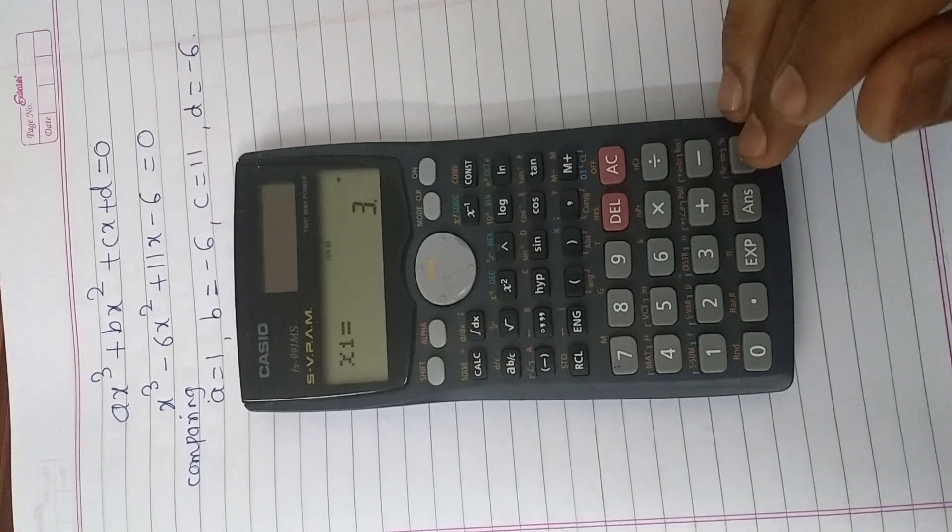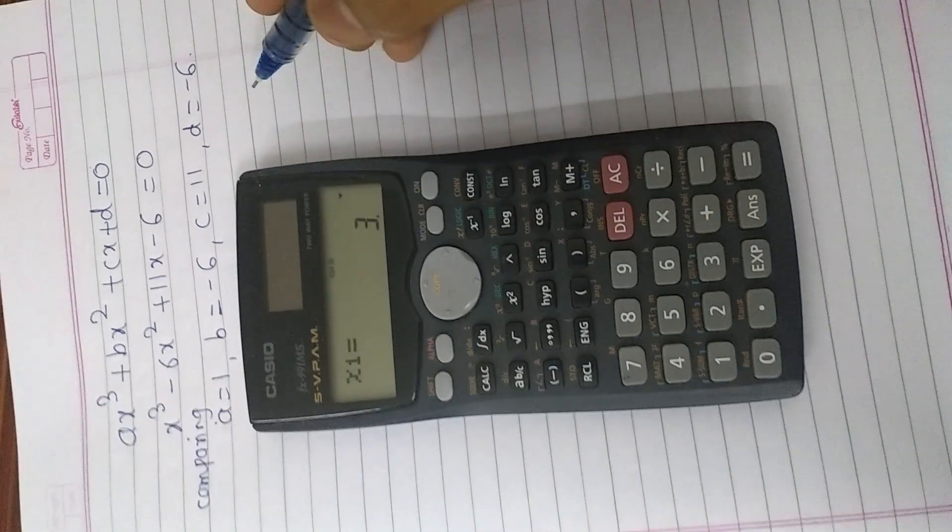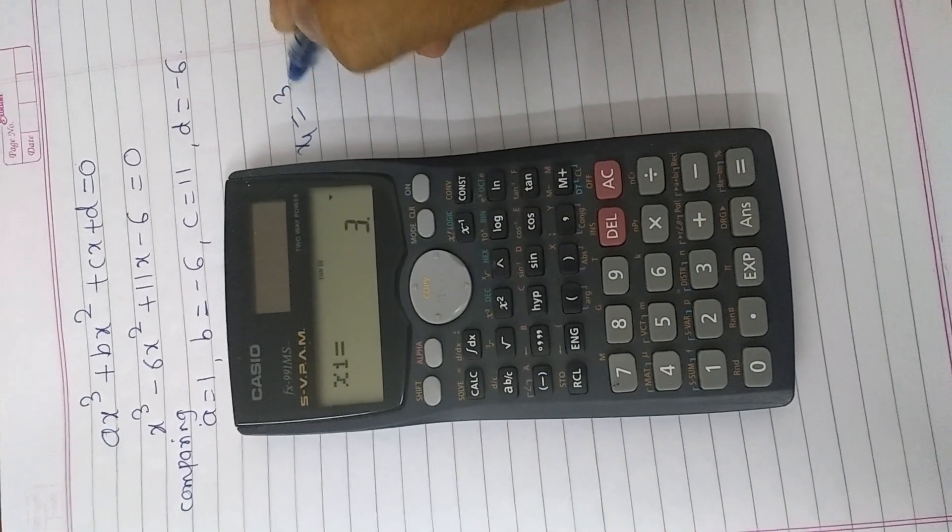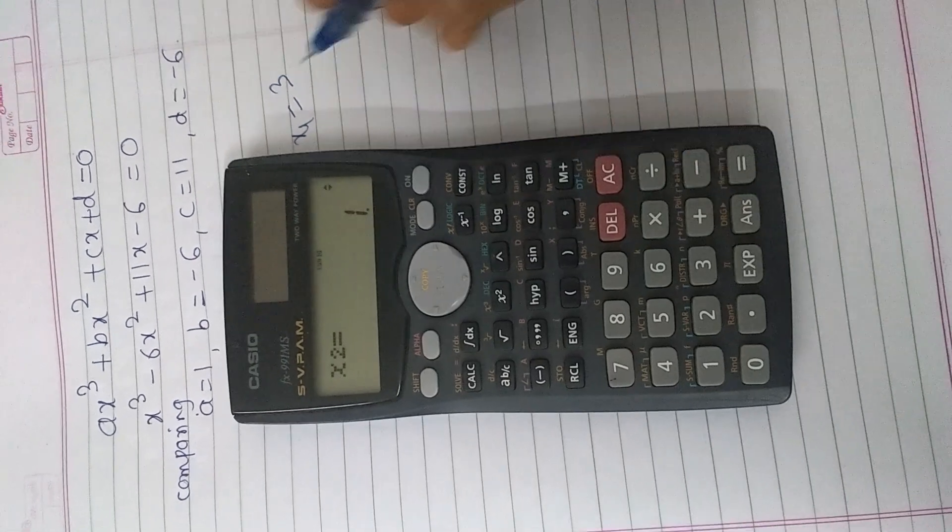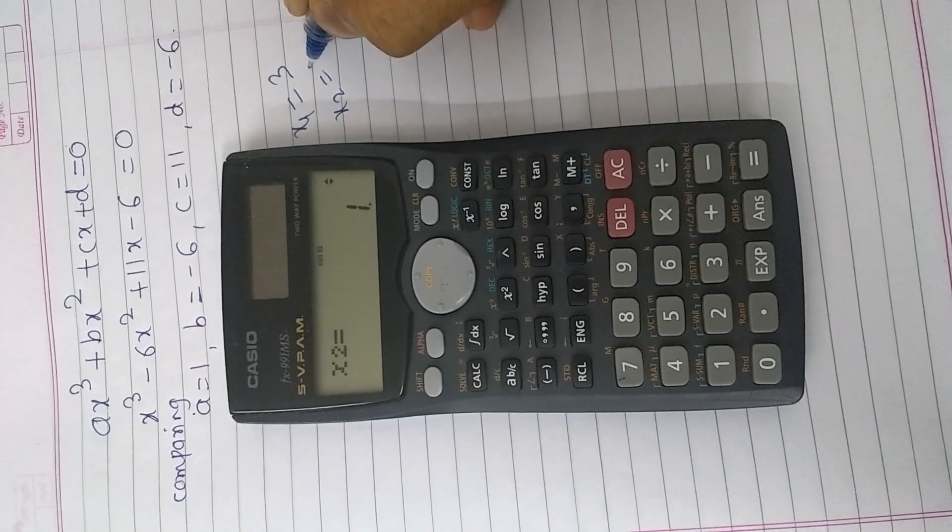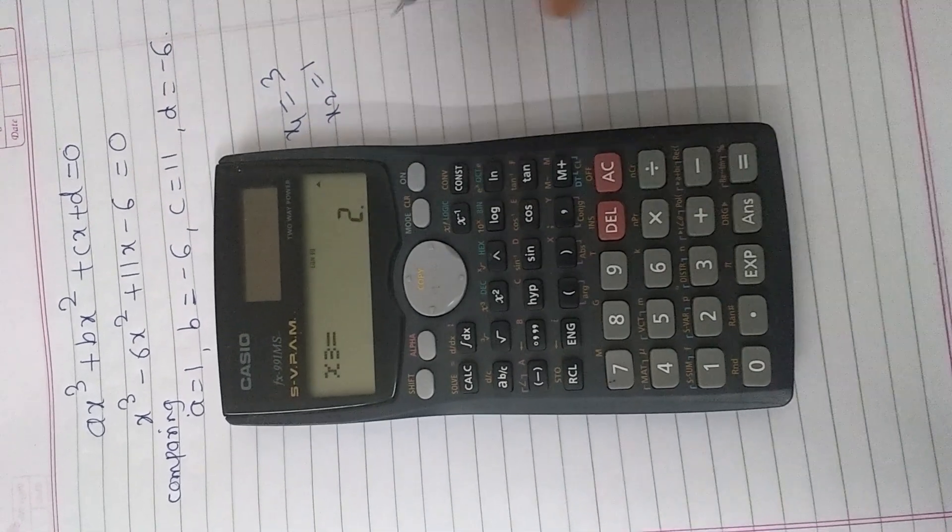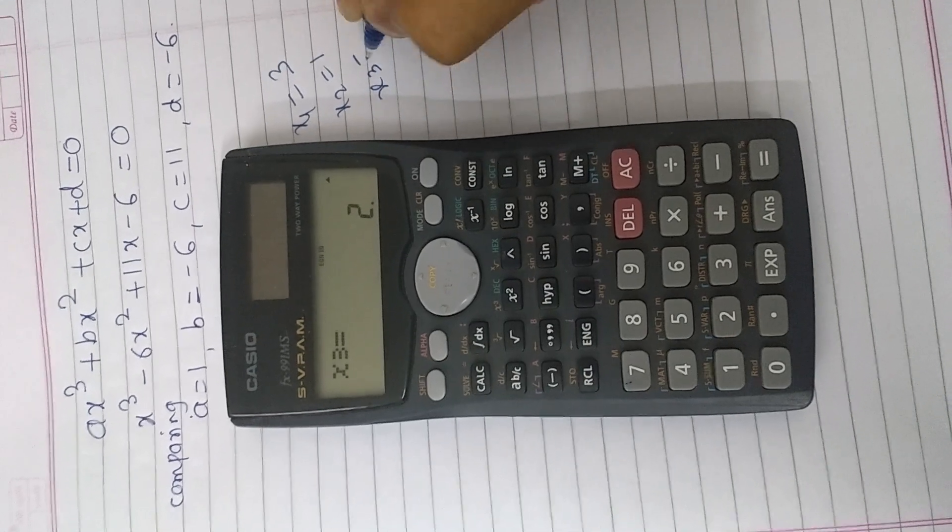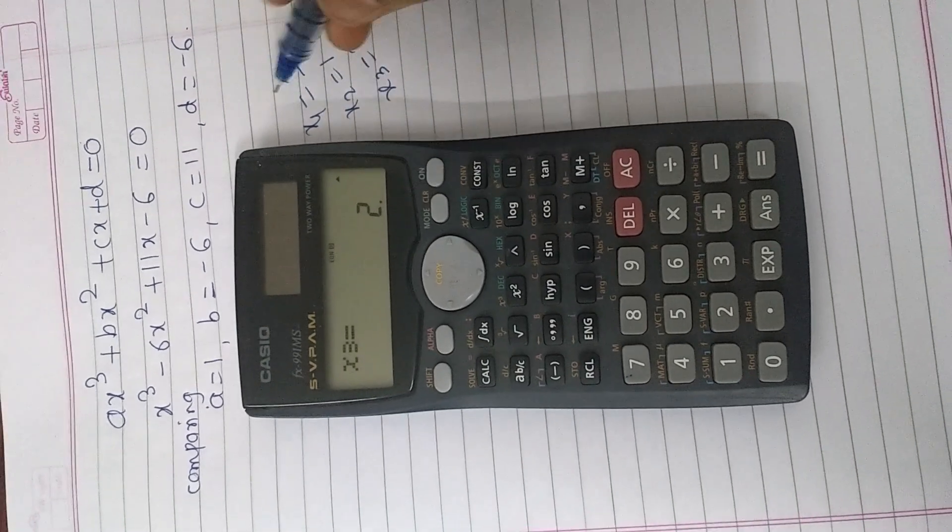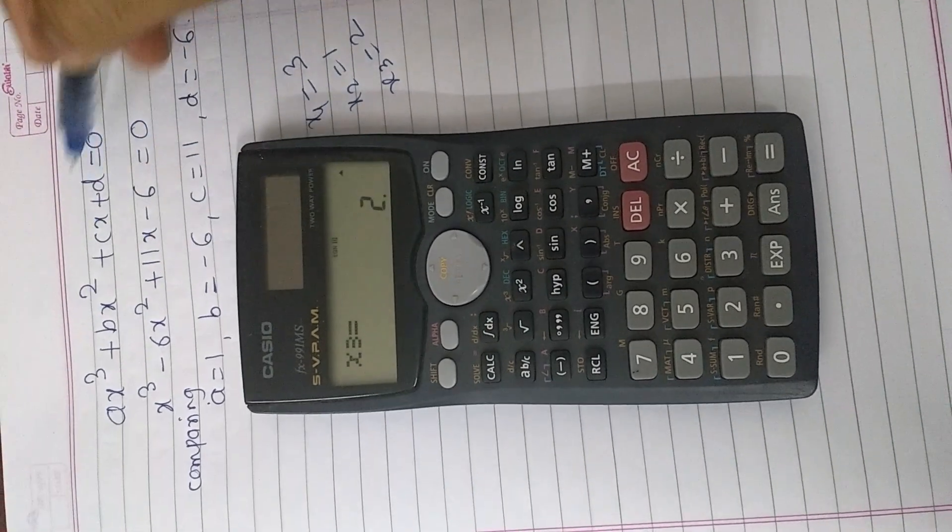Then we will get the solution that is x1 is equal to 3, press equal button, x2 is equal to 1, press equal button, x3 is equal to 2. These are the three roots of this cubic equation.